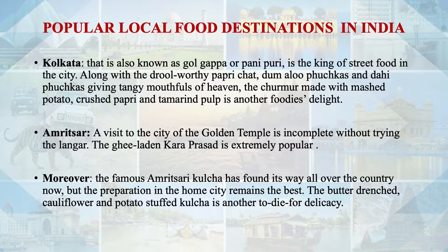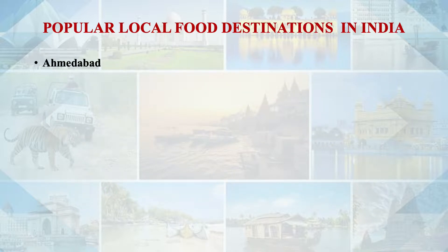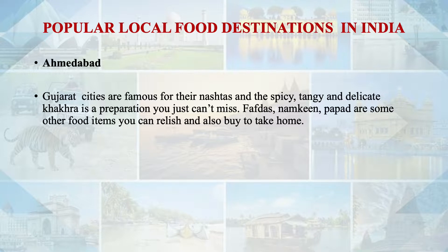Let us move to Ahmedabad, which is an important prominent city. Gujarati cities are famous for their nashtas, their spicy delicate khakra. We have namkis and papar as food items which have a long storage life and tourists prefer to buy and take them home.